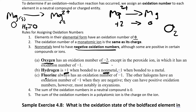Fluorine always has an oxidation number of negative one, unless it is in its elemental form — then it's zero. The other halogens can have positive oxidation numbers if they're bonded with a large number of oxygen atoms.